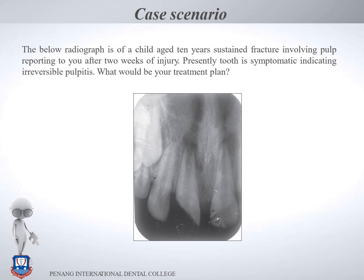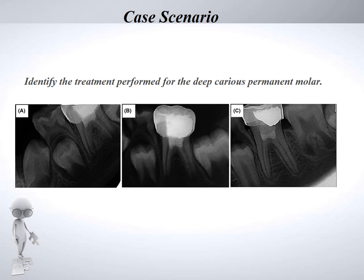Case question: a radiograph of a 10-year-old child who sustained a fracture involving the pulp, presenting after two weeks with symptoms indicating irreversible pulpitis. The pulp must be removed to relieve the pain, but with the pulp gone and an open apex, physiological closure cannot occur. The treatment option is therefore either apexification or regenerative endodontics.